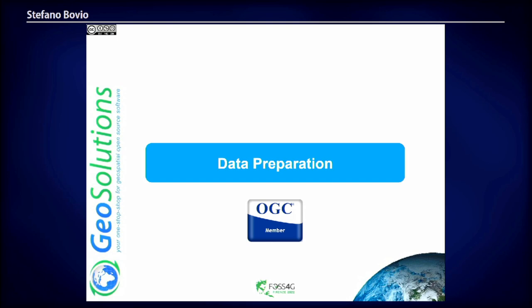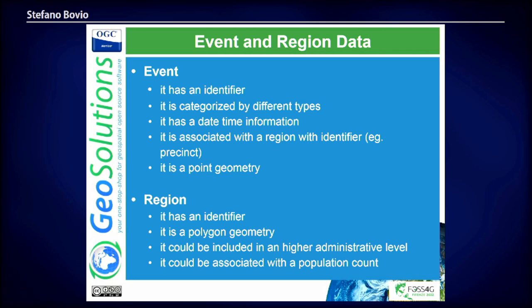Once we had an idea of how our infrastructure could work, we started to prepare the data. It's crime data — data related to crimes. To generalize and normalize the table containing this information, we called it 'event,' so it could be applied to different types of data sources. The important values needed for an event are a categorization property, a date/time, and a point geometry. For the crime data, we also added a region, since the sample data had an associated administrative region, and the polygon representing that region could be used in the final visualization.